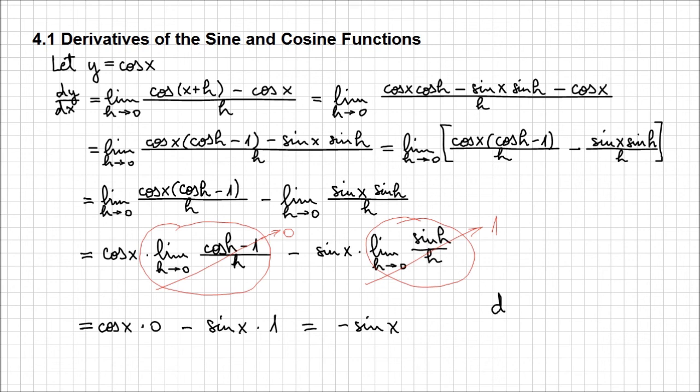With that, we can conclude that the derivative of the function cosine of x is equal to minus sine of x. With this, we have determined the derivatives of the sine and cosine functions in an algebraic fashion. Thanks for watching.